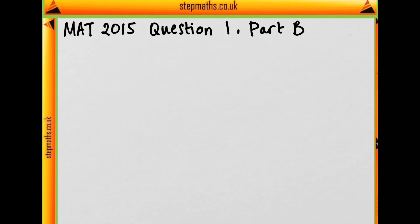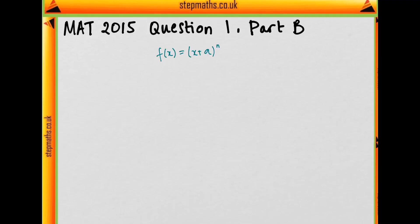Hi, in this video I'm going to go through part B of question 1 on the MAT 2015 paper. The question starts off by giving us this function f, where a is a real number and n is a positive whole number, which is greater than or equal to 2.